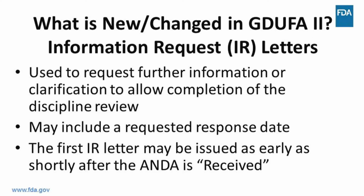The Information Request, or IR, letter is the second type of communication that an applicant may receive during the review of an ANDA. The GDUFA II Commitment Letter states that an IR letter is used to request further information or clarification that is needed or would be helpful to allow completion of the discipline review. It may also include a requested response period, and if a response is not received in a timely manner, the request may become a possible deficiency in a subsequent DRL or complete response letter.